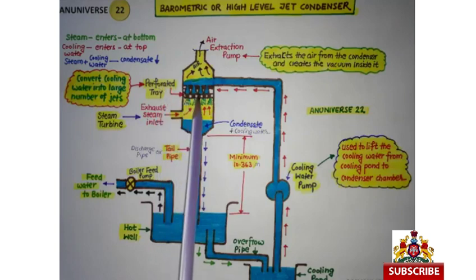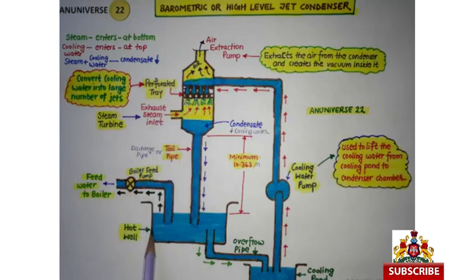Barometric और High Level Jet Condenser के अन्य Main Components हैं: Perforated Tray, Boiler Feed Pump, Hot Well, और Overflow Pipe।